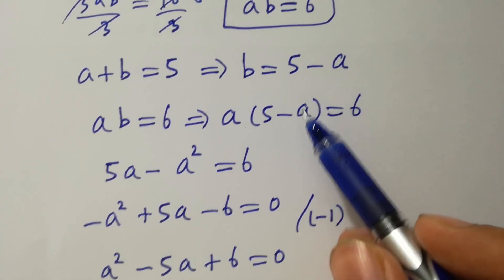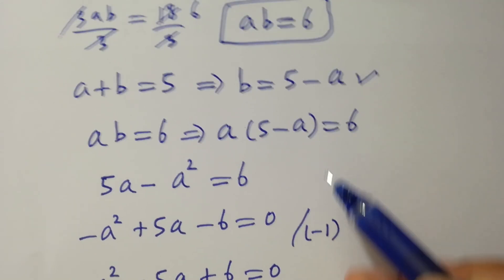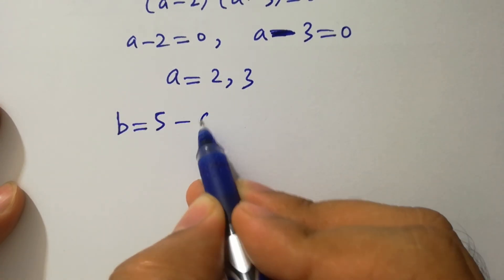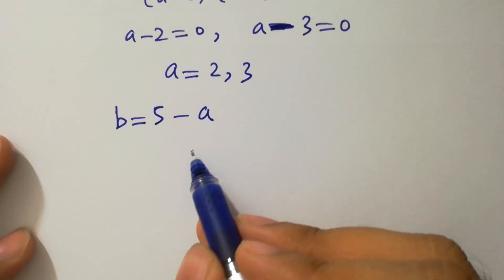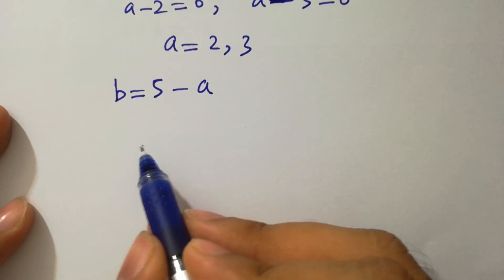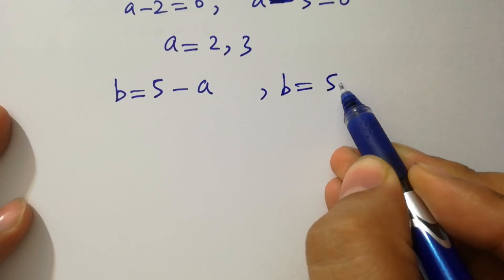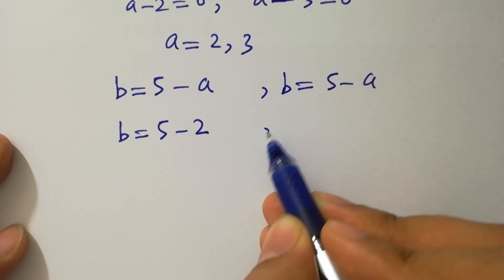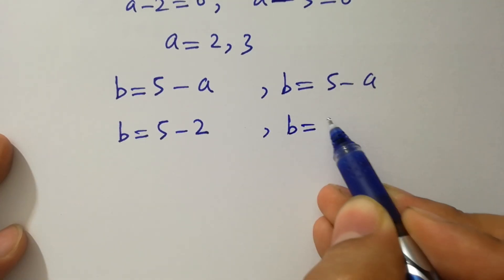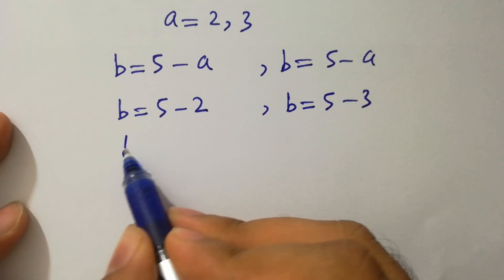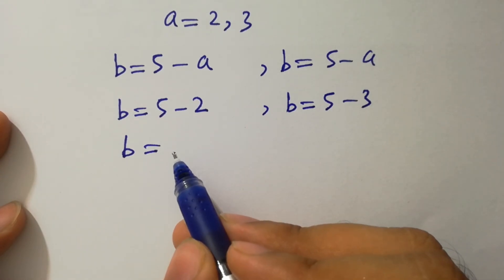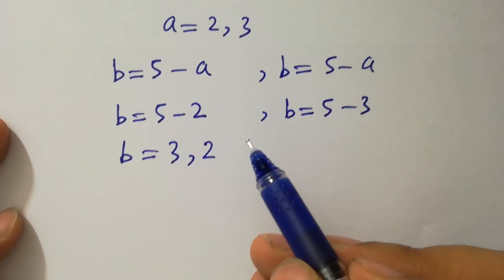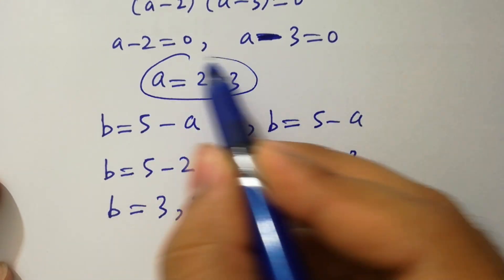We also need the value of b, where b equals 5 minus a. If a equals 2, then b equals 5 minus 2 equals 3. If a equals 3, then b equals 5 minus 3 equals 2. So the pairs are a equals 2, b equals 3, or a equals 3, b equals 2.